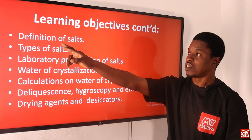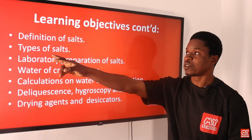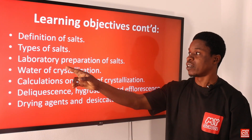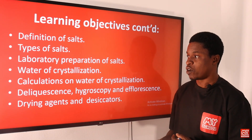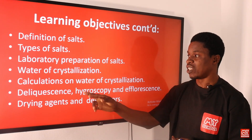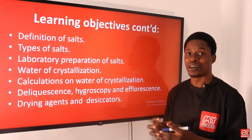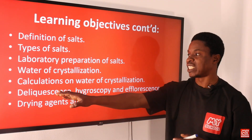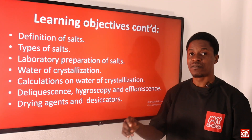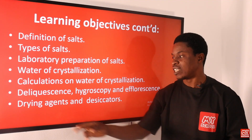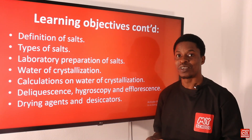We'll also be looking at the definition of salts, what are salts, and the types of salts. We'll be looking at laboratory preparation of salts, water of crystallization, and calculations on water of crystallization — how do you calculate the amount of water found in a salt. We'll also look at deliquescence, hygroscopic substances, and efflorescence, and finally drying agents and desiccators.